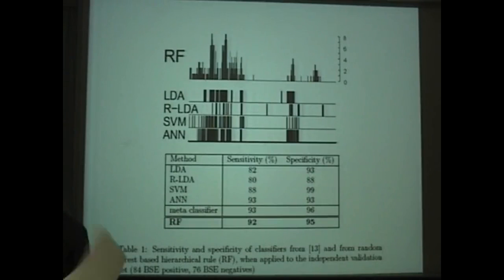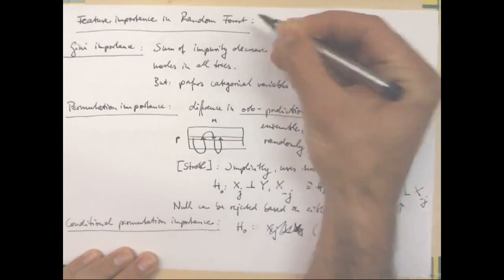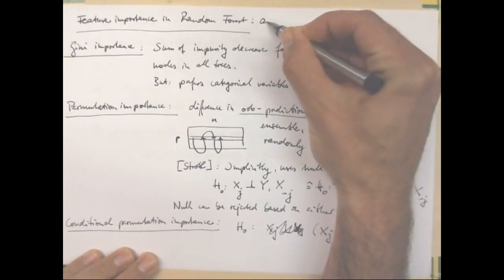So that's a very good question. Thank you. The nice thing about these feature importances in Random Forest is that they are multivariate measures.